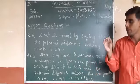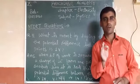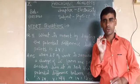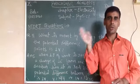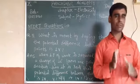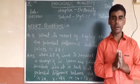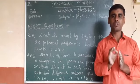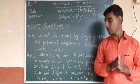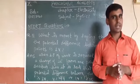Electric potential is the amount of work done required to carry a unit positive charge from infinity to a particular point. Potential difference is the amount of work done required to carry a unit positive charge from one point to another point.